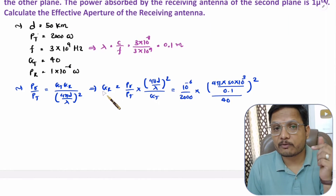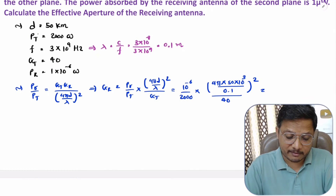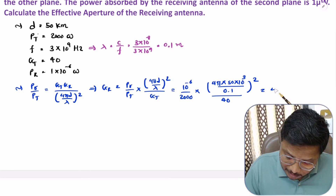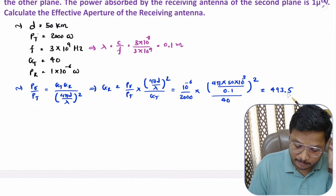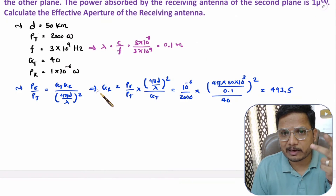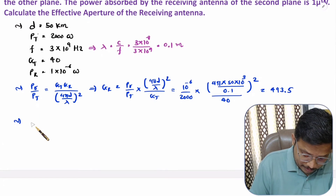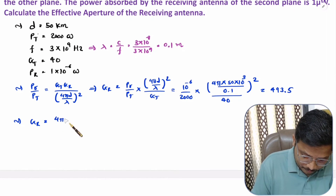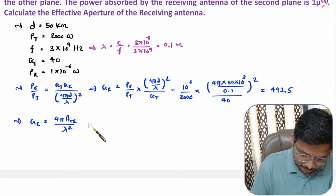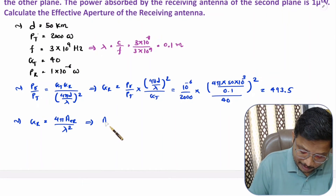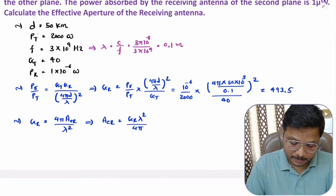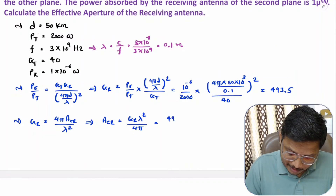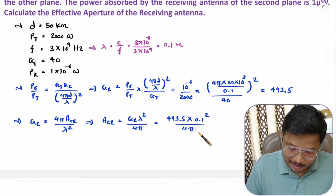Solving this calculation gives Gr = 493.5. Now, based on the gain of the receiving antenna, one can calculate effective aperture using: Gr = 4π × Ae / λ², so Ae = Gr × λ² / (4π). Substituting: Ae = 493.5 × (0.1)² / (4π).